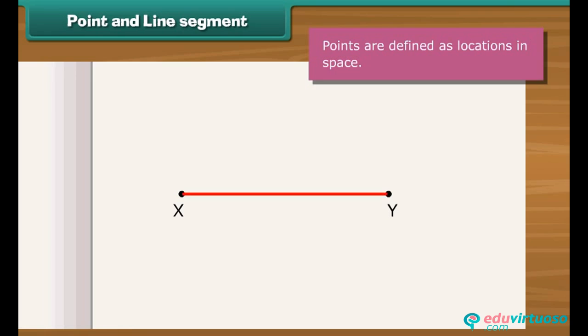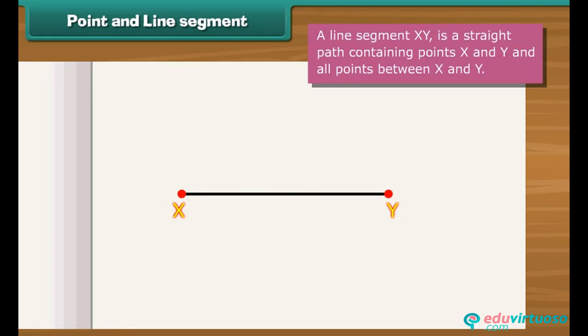What if the two points are connected? We will get a line segment. A line segment XY is a straight path containing points X and Y and all points between X and Y. The points X and Y are end points.